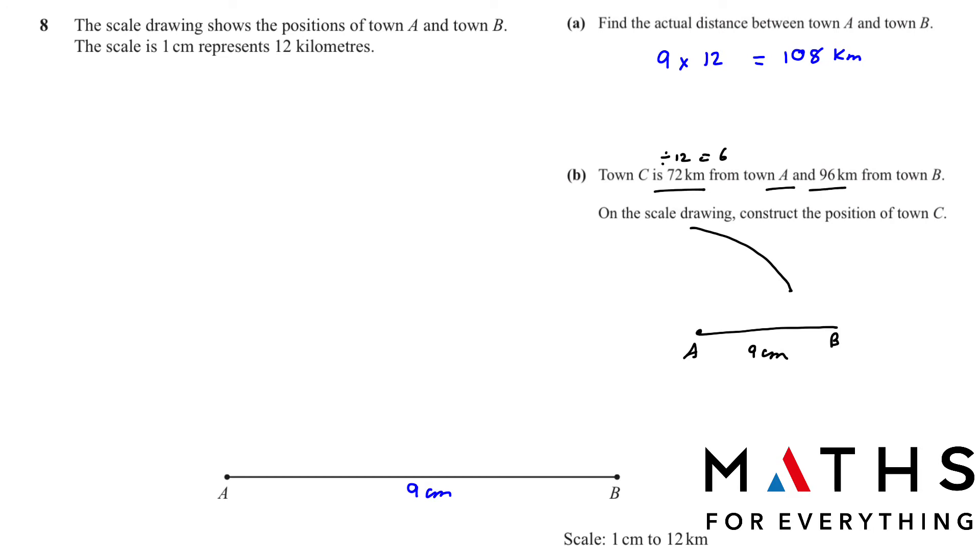Then 96 kilometers from town B. So 96 divided by 12 will give us 8. And we will take 8 centimeters from B. So wherever they make the arc we join them together. This will be 6 centimeters and here will be 8 centimeters. This is how your final diagram will look like. Remember to write your units.